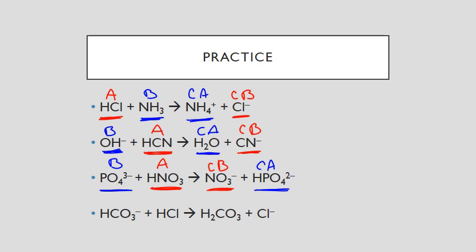In my last example, HCO₃⁻ is what I'm starting with, and its partner is H₂CO₃. In order to do that, it had to gain a hydrogen, so it started as a base and turned into the conjugate acid. The other part of my reaction is HCl; its partner is Cl⁻. In order to go from HCl to Cl⁻, it started as an acid and turned into the conjugate base.